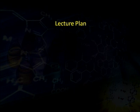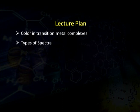Today we are going to discuss the electronic spectra of transition metal complexes. In our daily life we see different types of transition metals of different colors. For example, blood is red because it contains iron. Chromates are yellow because they contain different transition states of chromium. Our lecture plan covers color in transition metal complexes, the types of spectra obtained during transition, and their electronic transitions.